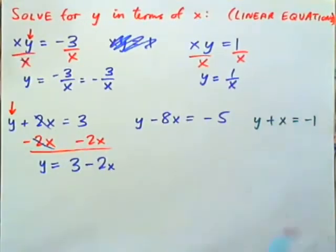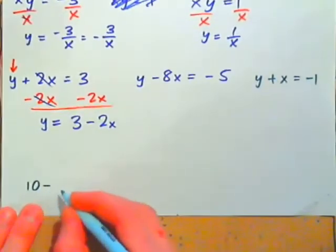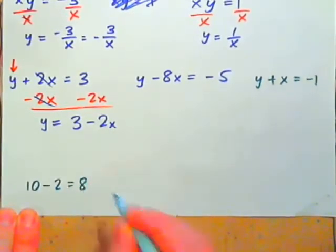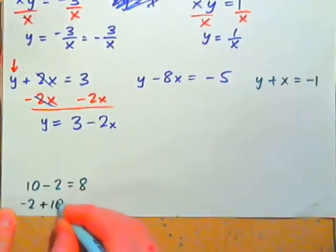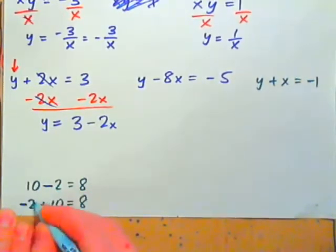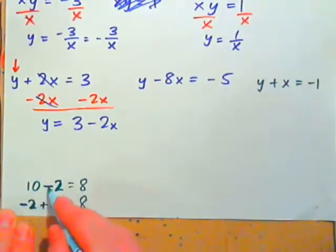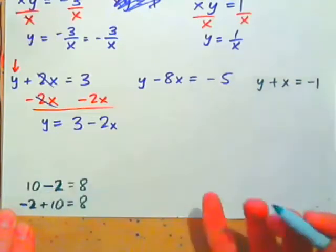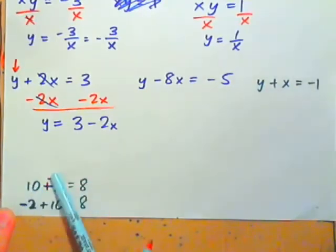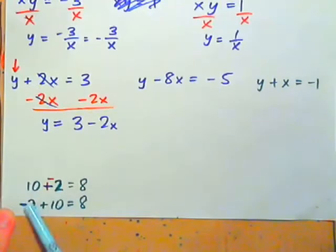There's another skill we should practice. Take 10 minus 2 — that's 8. And negative 2 plus 10 is also 8. The reason these are the same is that subtraction is the same as adding the opposite: 10 minus 2 is 10 plus negative 2, or negative 2 plus 10. So if we want to rewrite 3 minus 2X with the X term in front, that's the same as negative 2X plus 3.